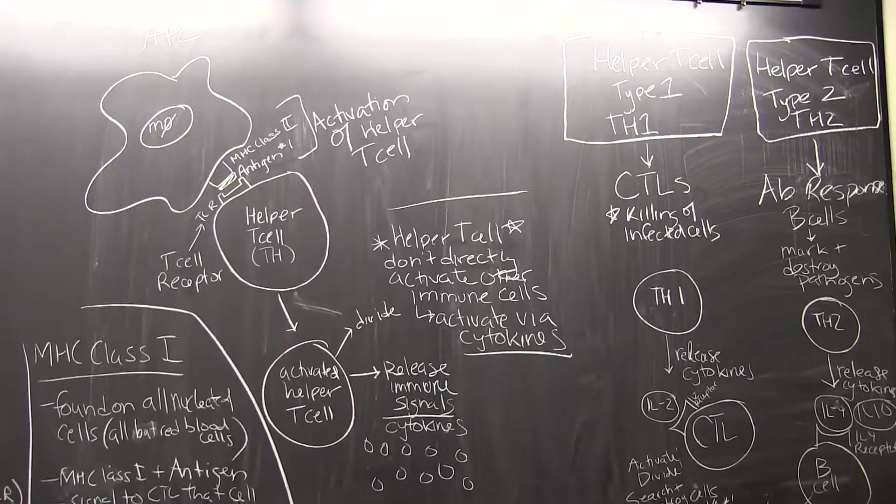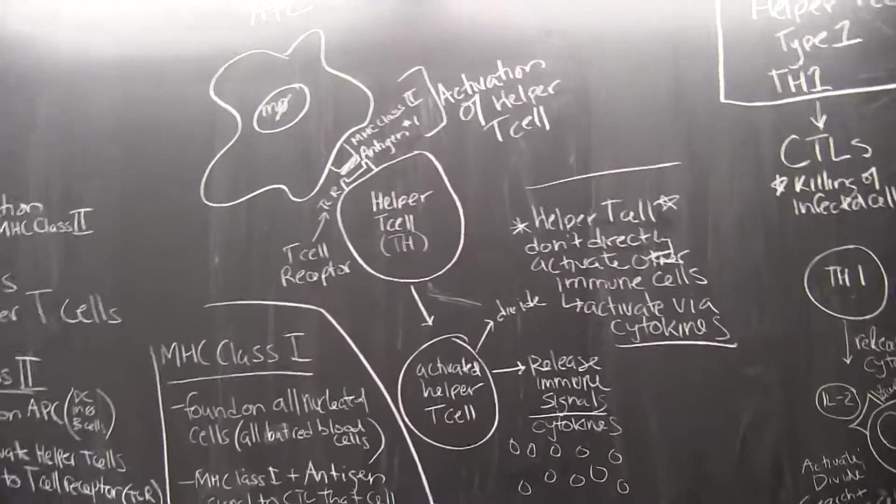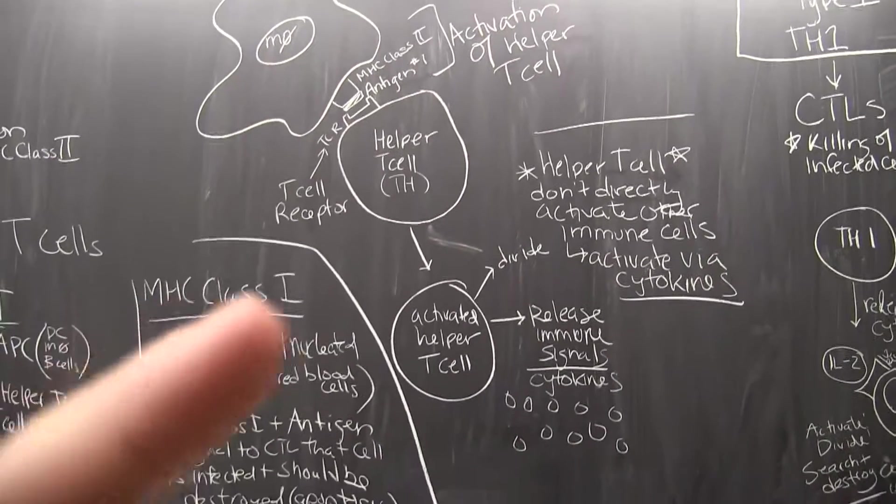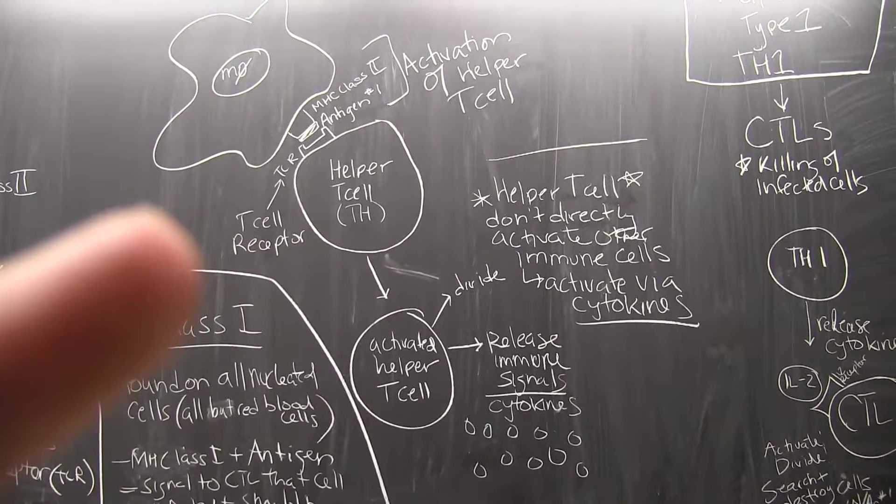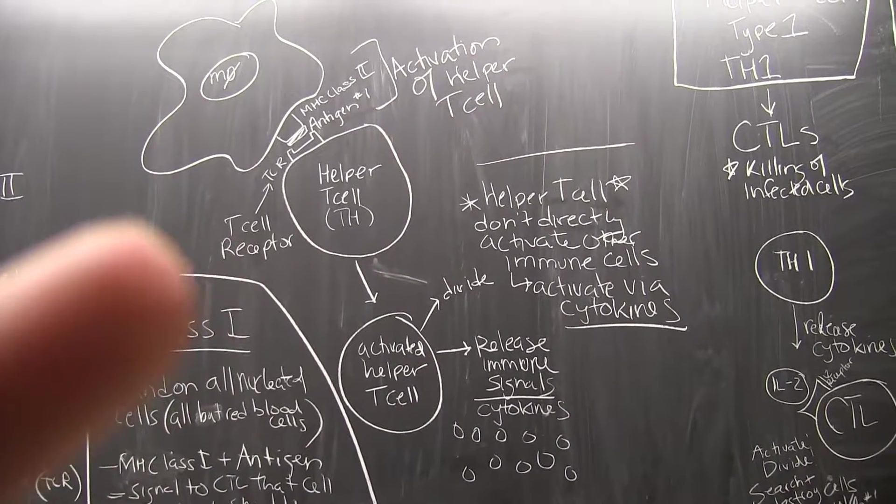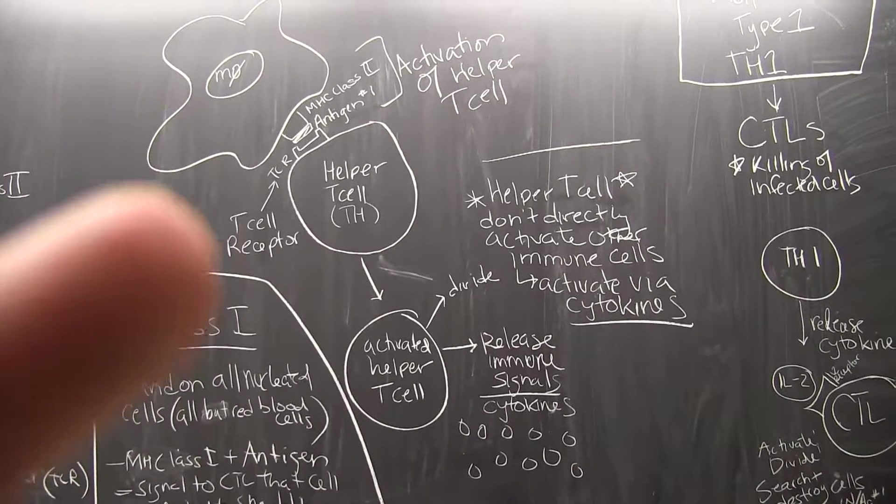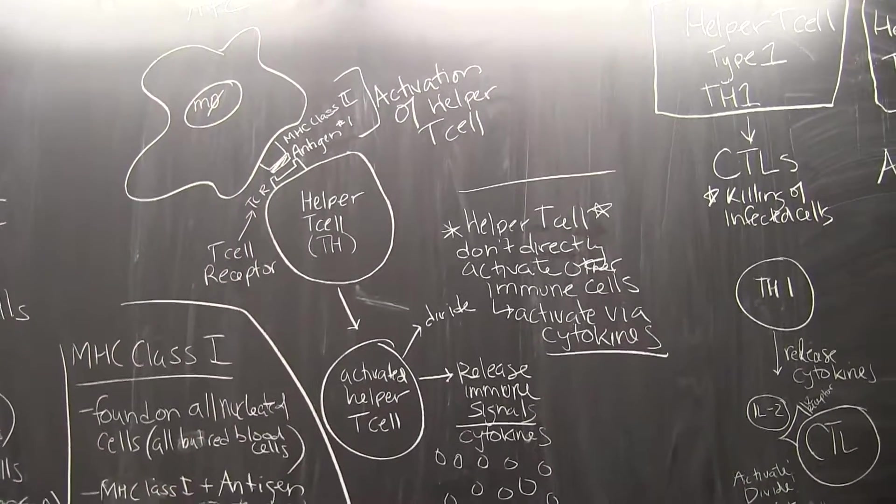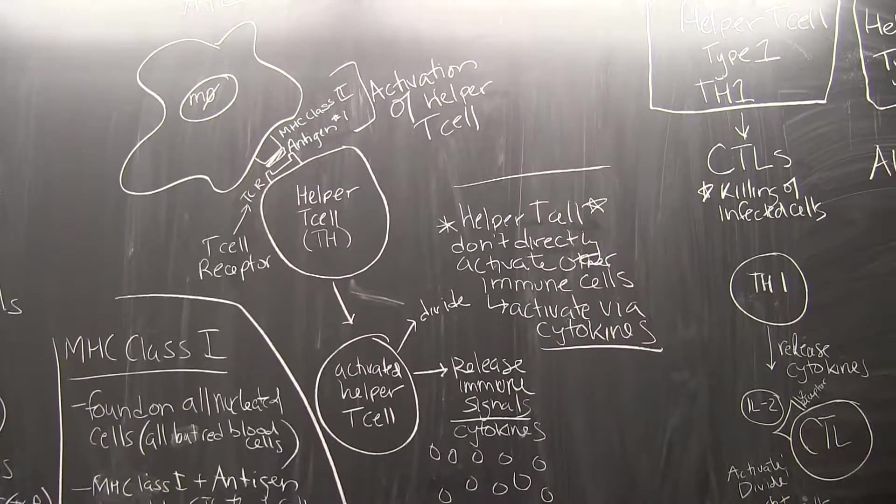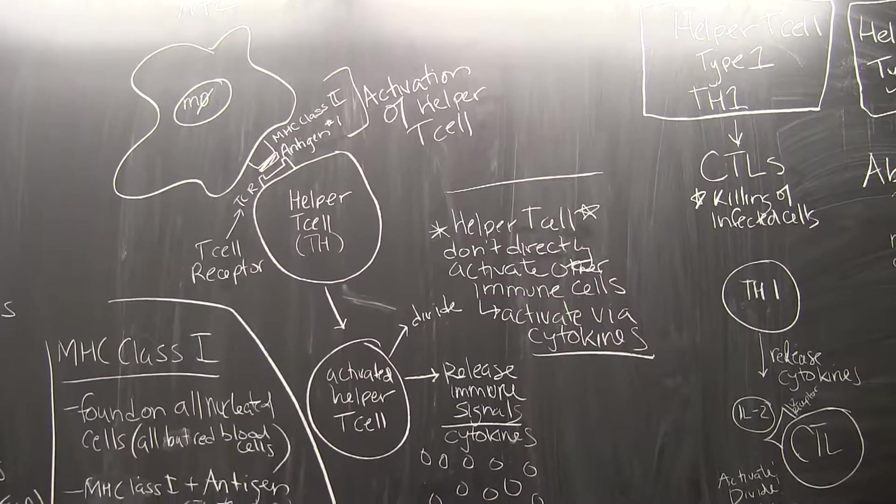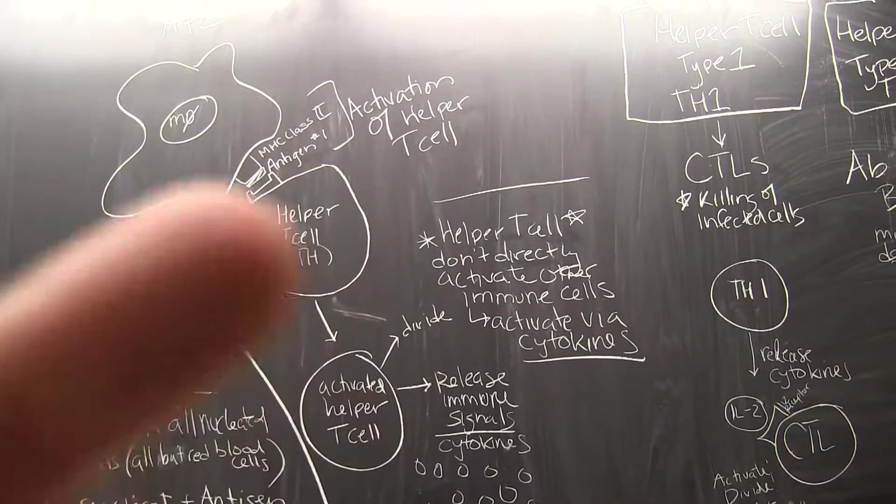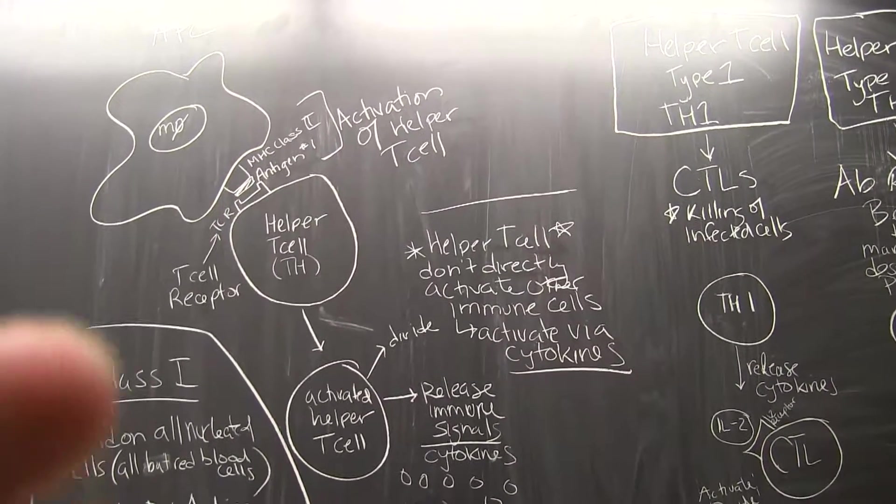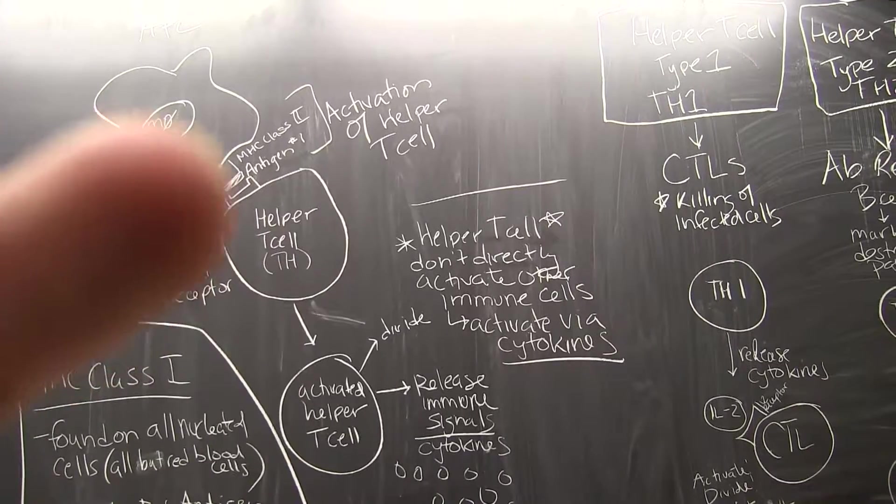What happens is the helper T cells have a specific receptor on their surface called the T cell receptor. Actually all T cells have a T cell receptor on it, so we label this as TCR. This TCR is specific for antigen number one. So if we had antigen number two loaded up in the MHC class two, we would need a different TCR and a different helper T cell. So one helper T cell, one kind of T cell receptor which fits one pairing of antigen plus MHC class two.